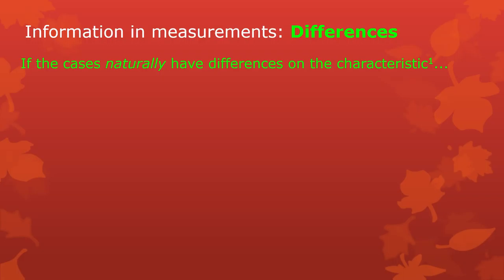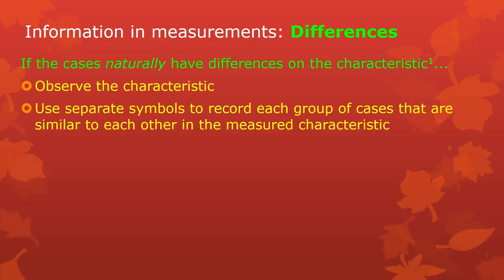So if there's any potential difference on the characteristic, then you observe that characteristic and use separate symbols to record each group of cases that are similar to each other. For example, if you're observing leaves and the thing you've chosen to observe is their color, and you've decided the categories are red, green, brown, orange, or yellow, you use a spectrometer or have people judge which color is closest.